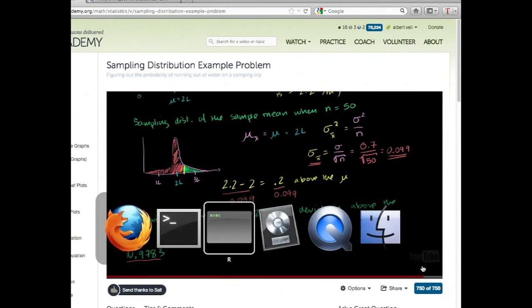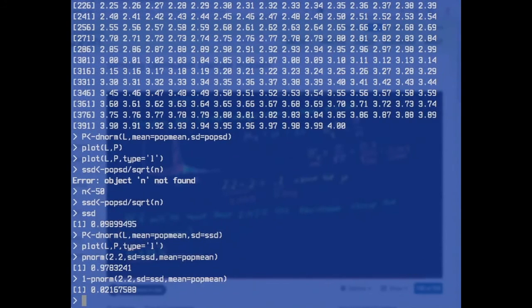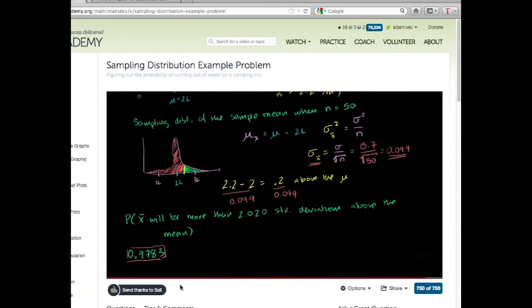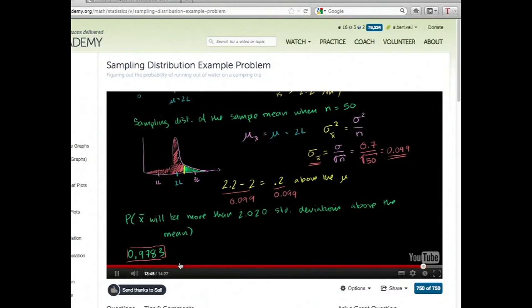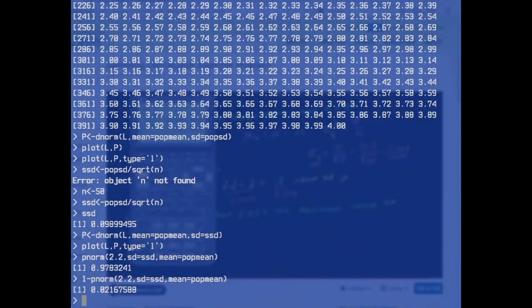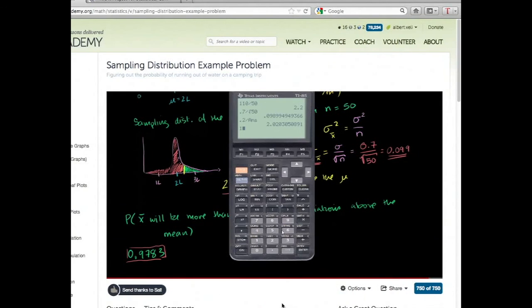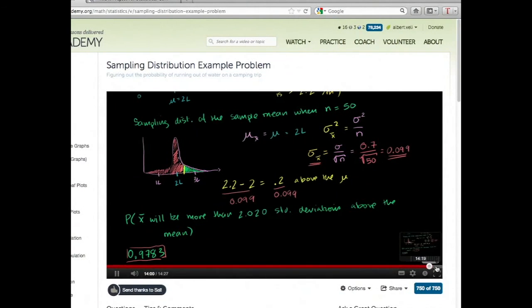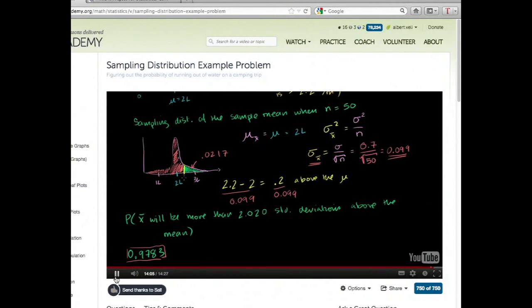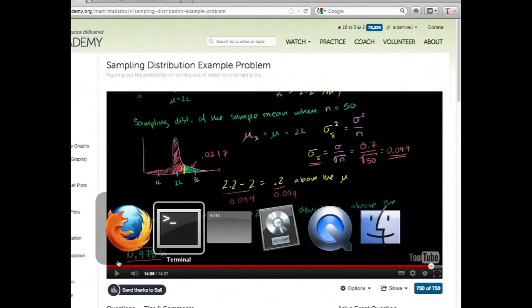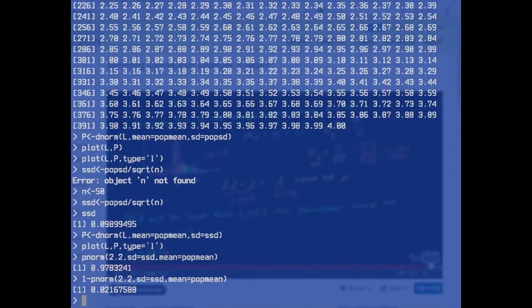That's the same as we got. This probability we just have to subtract from one because these all add up to one. He takes one minus this and gets 0.0217. One minus 0.9783 equals 0.0217, or 2.17 percent. And that's it. That's how you do it in R.